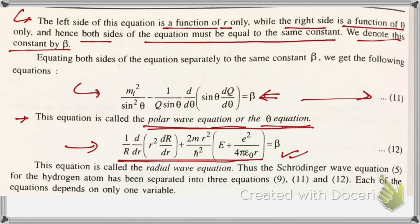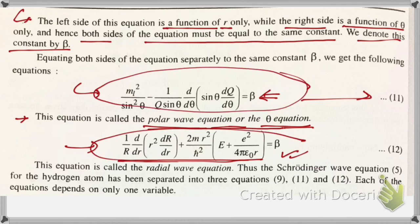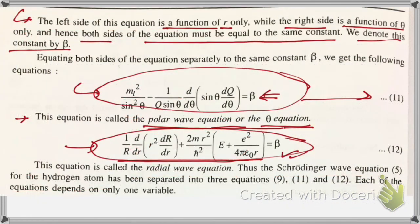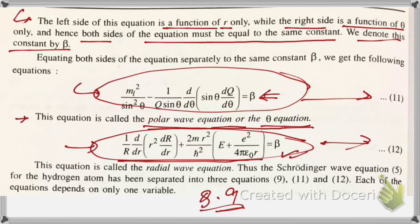We have successfully separated the Schrödinger equation into three forms: one radial part and two angular parts. This is the complete answer to question number nine. The remaining questions will be solved in the next video. Thank you for watching — if you are new to my channel, please subscribe, share the videos, hit the like button, and hit the bell icon to get notified when new videos are uploaded.